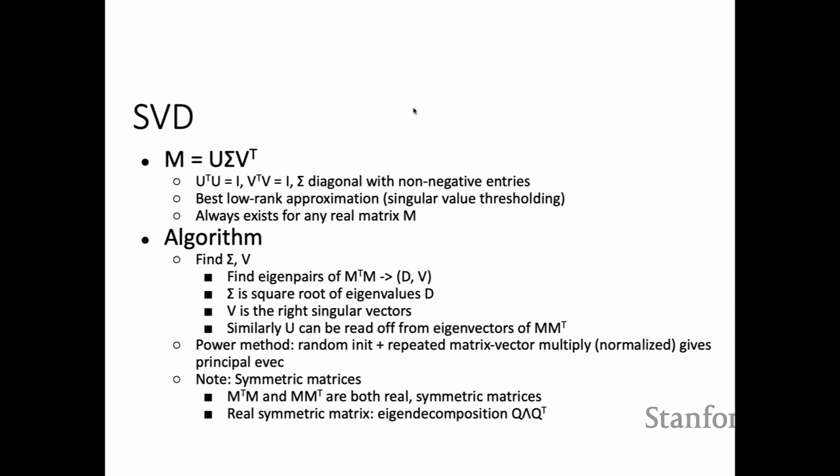To find the SVD, we look at the eigendecomposition of M-transpose-M, which is a real symmetric matrix. This gives us eigenvalues D and eigenvectors V — V are the right singular vectors of M, while sigma is the square root of the eigenvalues. Similarly, starting from M-M-transpose gives us U and sigma. To calculate eigenvalues we use power iteration: start with a random initialization and keep multiplying by the same matrix to get the principal eigenvector. For a real symmetric matrix, the eigendecomposition is Q-lambda-Q-transpose, where Q is the eigenvector basis and lambda is the diagonal matrix of eigenvalues.